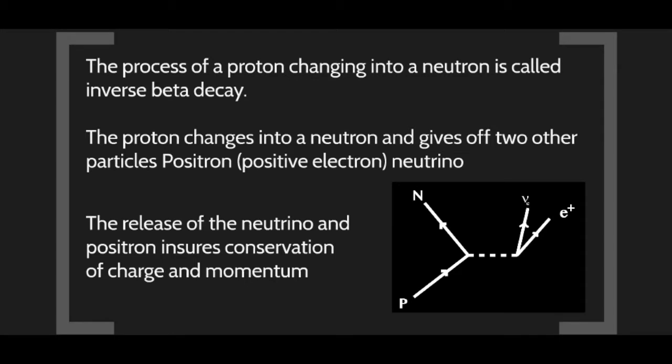When a proton turns into a neutron, it must conserve momentum and electric charge. In the process it creates a positron — the antimatter particle of an electron — and an electron neutrino. We can detect these electron neutrinos coming from the Sun, which confirms what is happening in the core. The positron quickly meets an electron and they annihilate, producing gamma rays as part of the energy output.